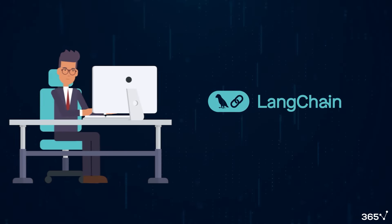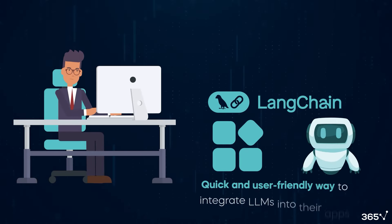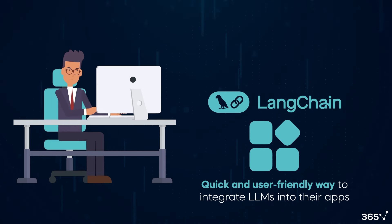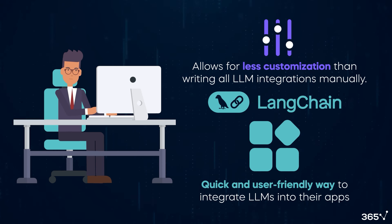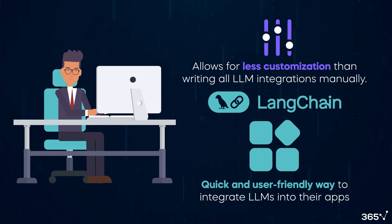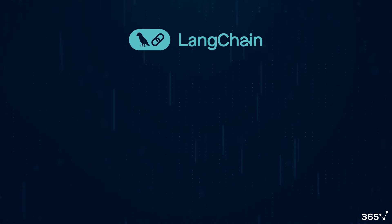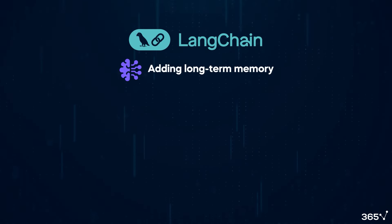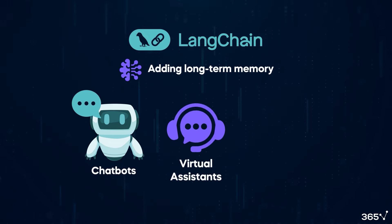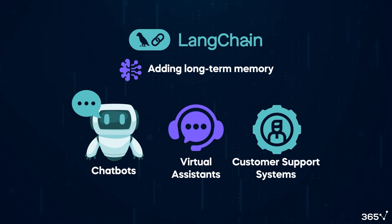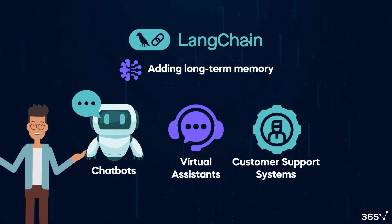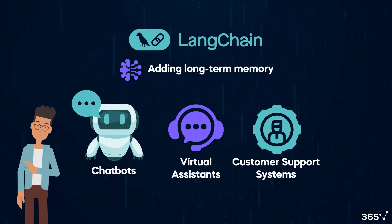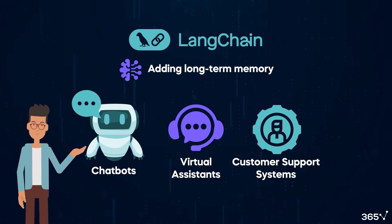This tool's advantage is that it gives developers a quick and user-friendly way to integrate LLMs into their apps. At the same time, LangChain allows for less customization than writing all LLM integrations manually. Another frequent use case of LangChain is adding long-term memory to apps such as chatbots, virtual assistants, and customer support systems. This helps AI systems improve their interactions and become more intelligent by considering the history of previous conversations.